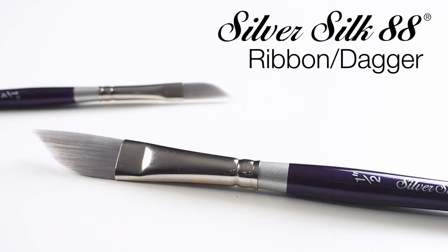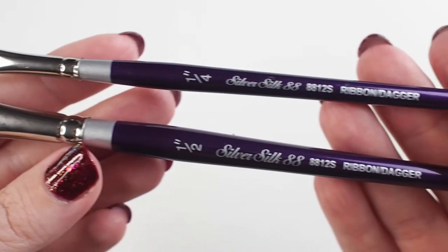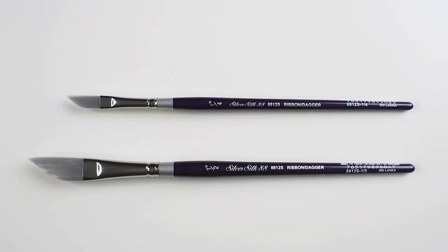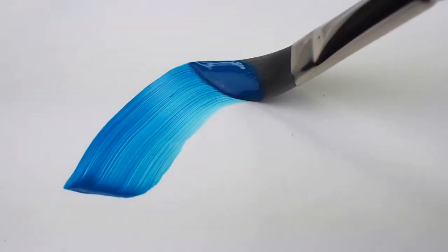We've got a Silver Silk 88 ribbon dagger here. This top-of-the-line brush is short-handled and comes in a selection of sizes and it's really just a pleasure to use.